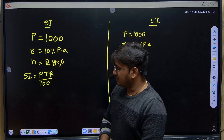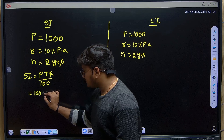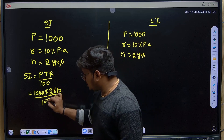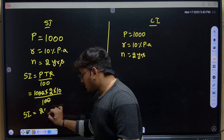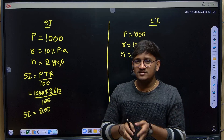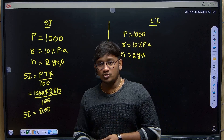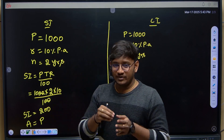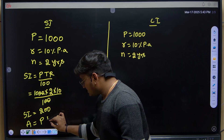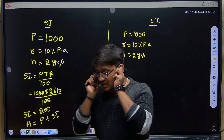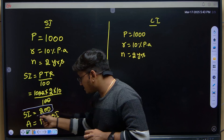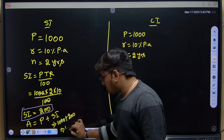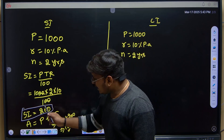The simple interest formula is PTR by 100. Substituting values: P = 1000, T = 2 years, R = 10%. The two zeros cancel, giving simple interest = 200. Sometimes they ask for simple interest, sometimes for total amount. Total amount equals principal plus interest, so total amount = 1000 + 200 = 1200. If asked for simple interest, answer is 200; if asked for total amount, answer is 1200.